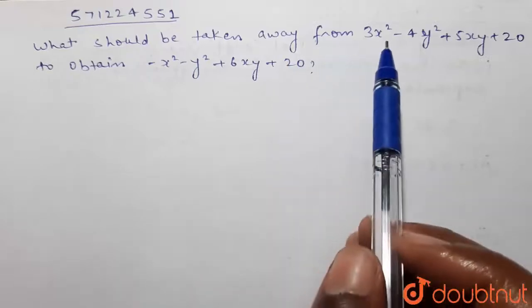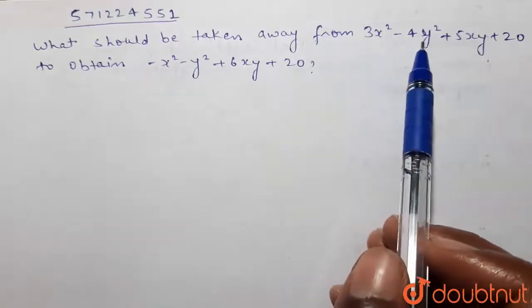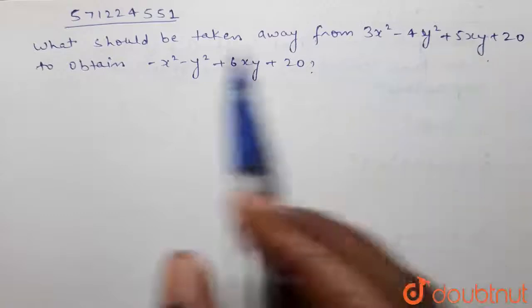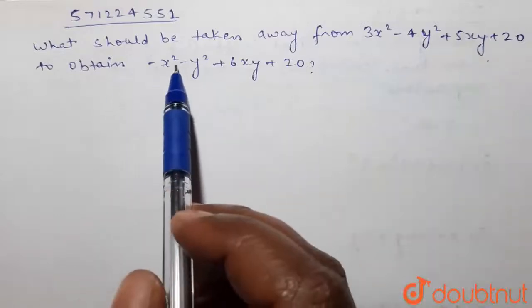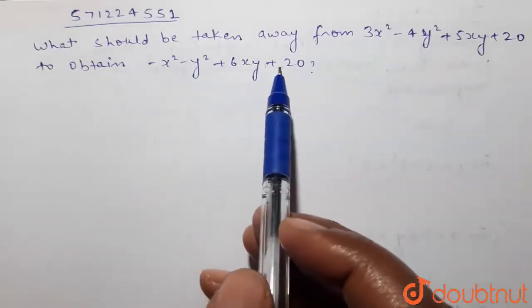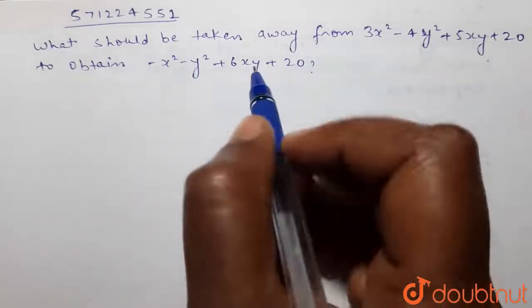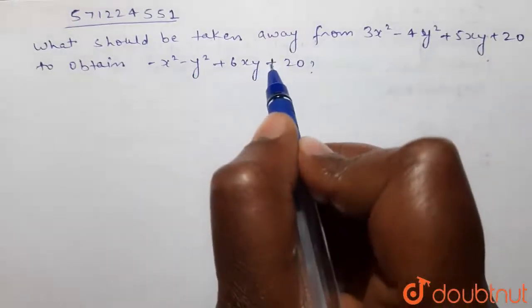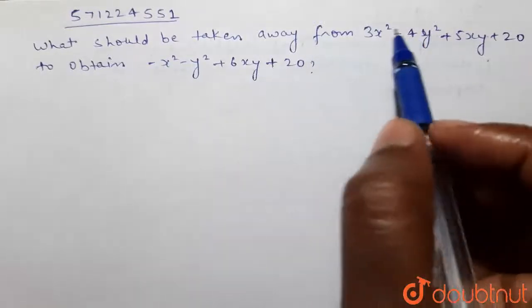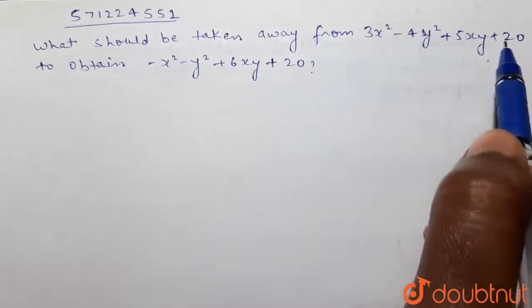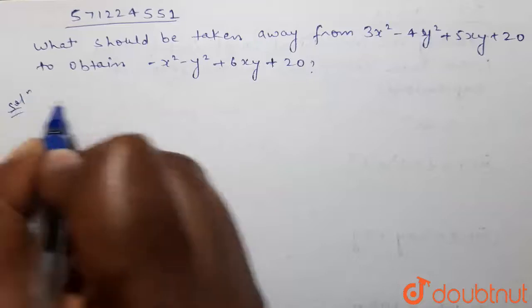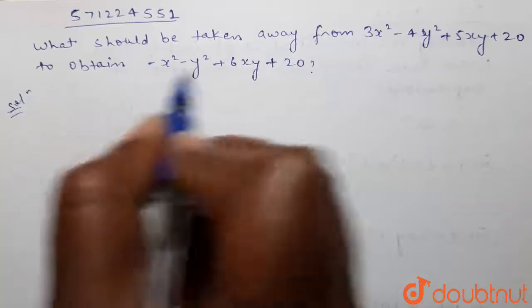The question is: what should be taken away from 3x² minus 4y² plus 5xy plus 20 to obtain minus x² minus y² plus 6xy plus 20? So we have to take some expression from this expression — that means we have to subtract.